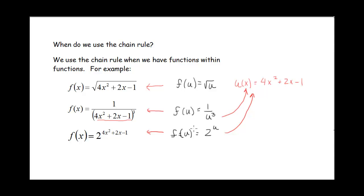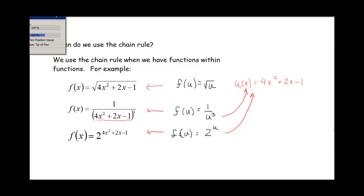The chain rule tells us that what we do is take the derivative of the outer function and then multiply by the derivative of the inner function. When you've got a function with multiple levels — functions within functions — you take the derivative of the outer function and multiply by the derivative of the inner function.